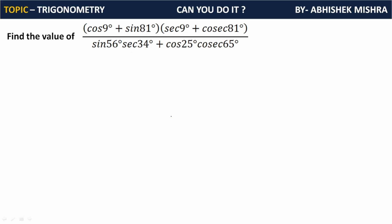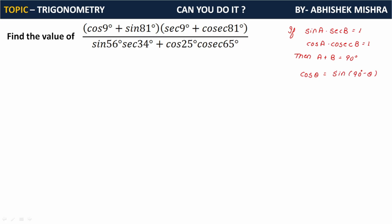For the next question we are going to use three or four important formulas. If sine A · sec B equals 1, or cos A · cosec B equals 1, then A plus B equals 90 degrees, and vice versa. One more thing to understand: cos θ equals sine(90° - θ). These are the formulas we will use.